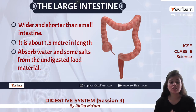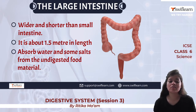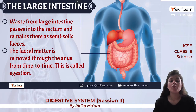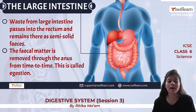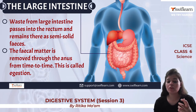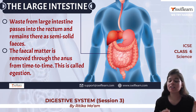The large intestine is wider but shorter than the small intestine, with a length of about 1.5 meters. Its function is to absorb water and some salts from undigested food material. Waste passes from the large intestine into the rectum as semi-solid feces, which are removed through the anus in a process known as egestion.